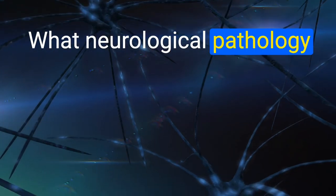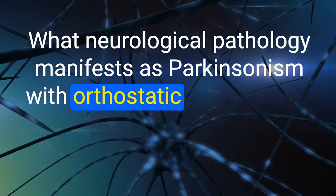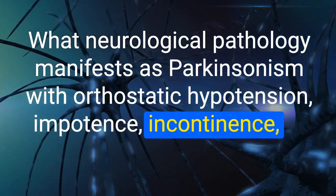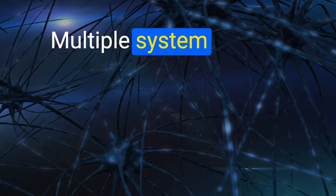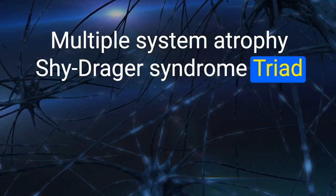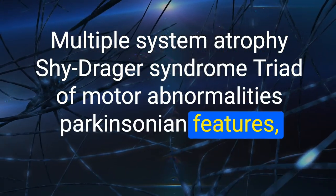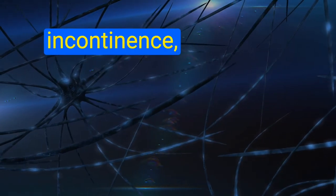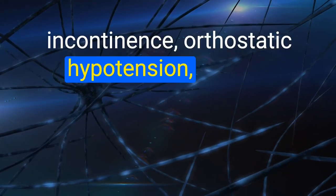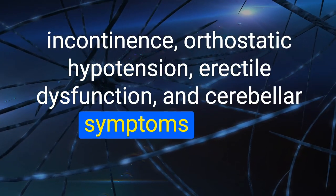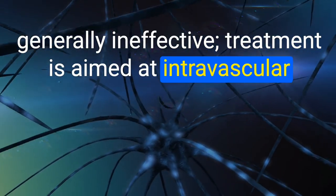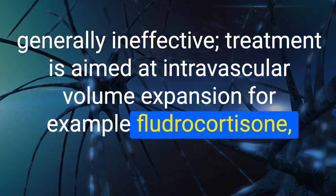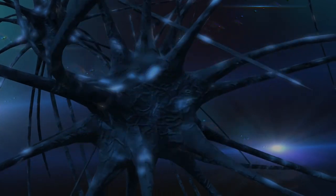81. What neurological pathology manifests as parkinsonism with orthostatic hypotension, impotence, incontinence, or other autonomic dysfunction? Multiple system atrophy (Shy-Drager syndrome). Triad: motor abnormalities/Parkinsonian features, autonomic dysfunction (incontinence, orthostatic hypotension, erectile dysfunction), and cerebellar symptoms. Anti-Parkinsonism drugs are generally ineffective; treatment is aimed at intravascular volume expansion (e.g., fludrocortisone, salt supplements).